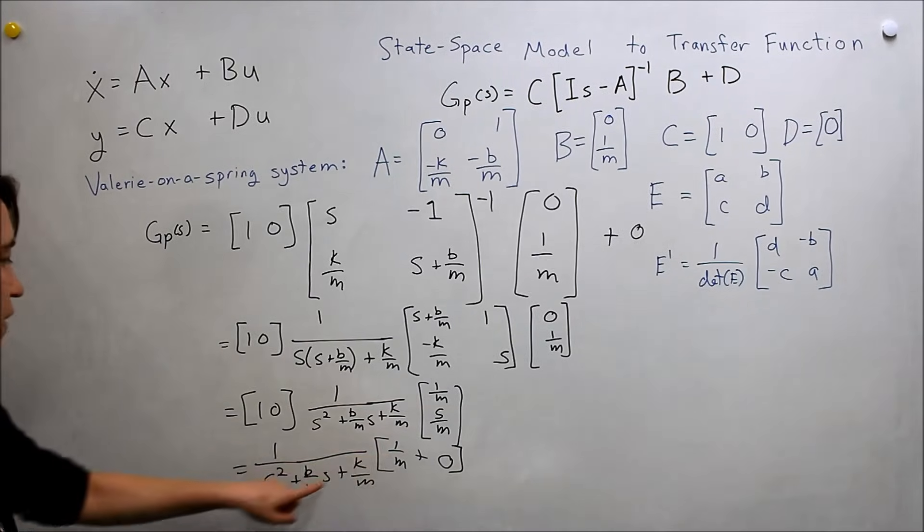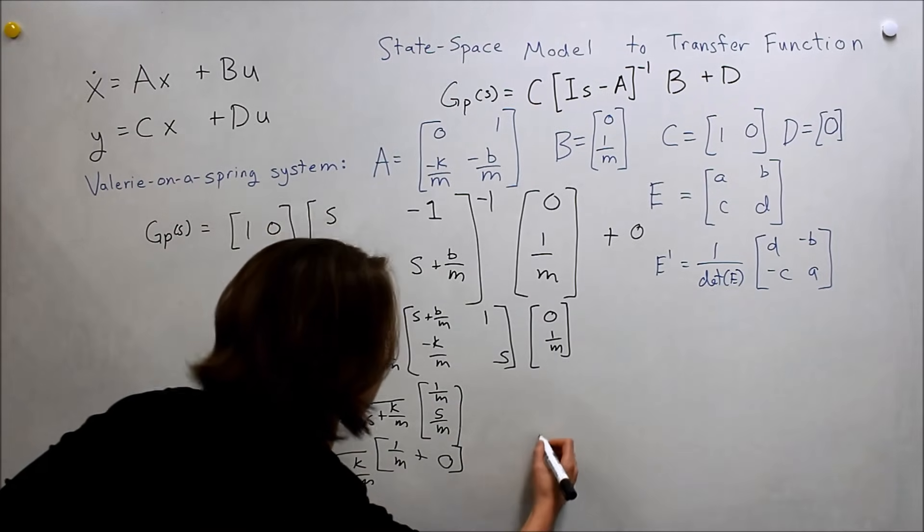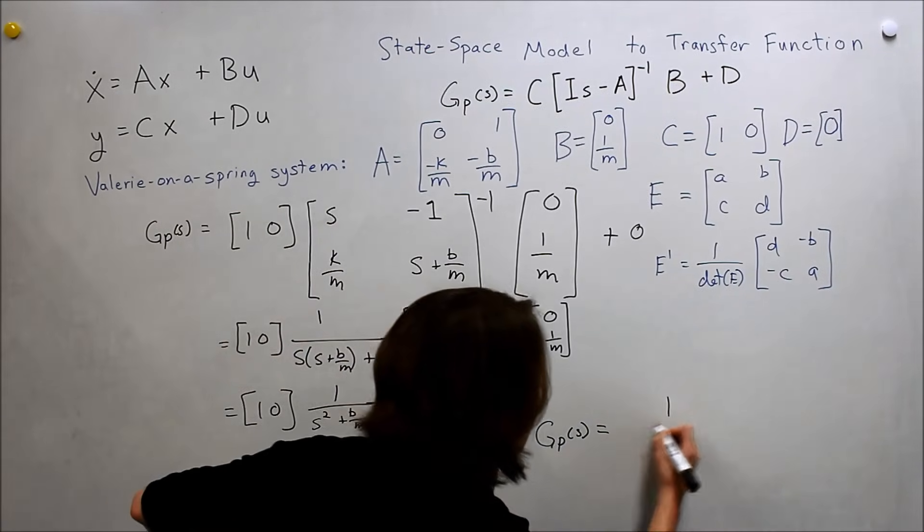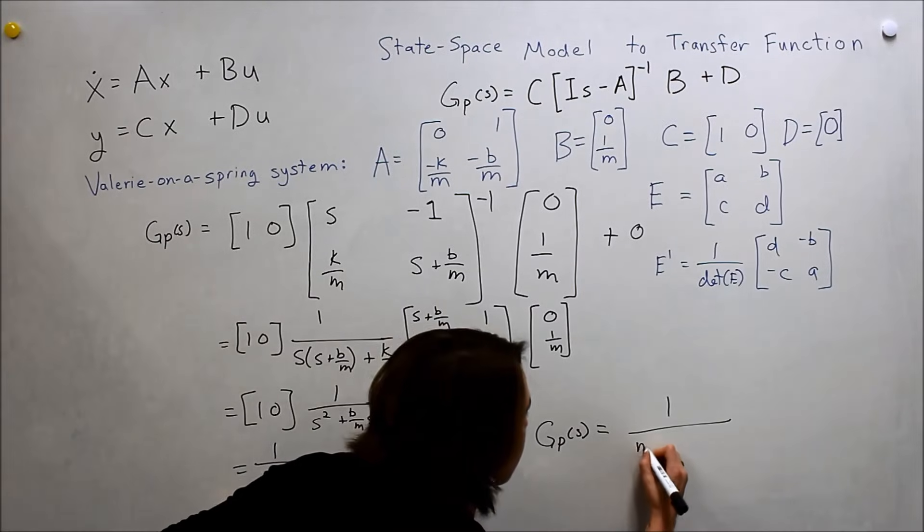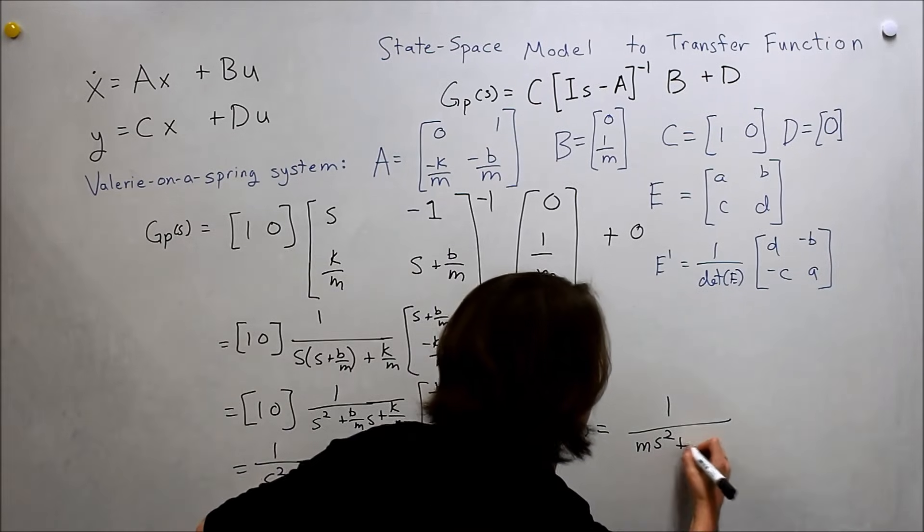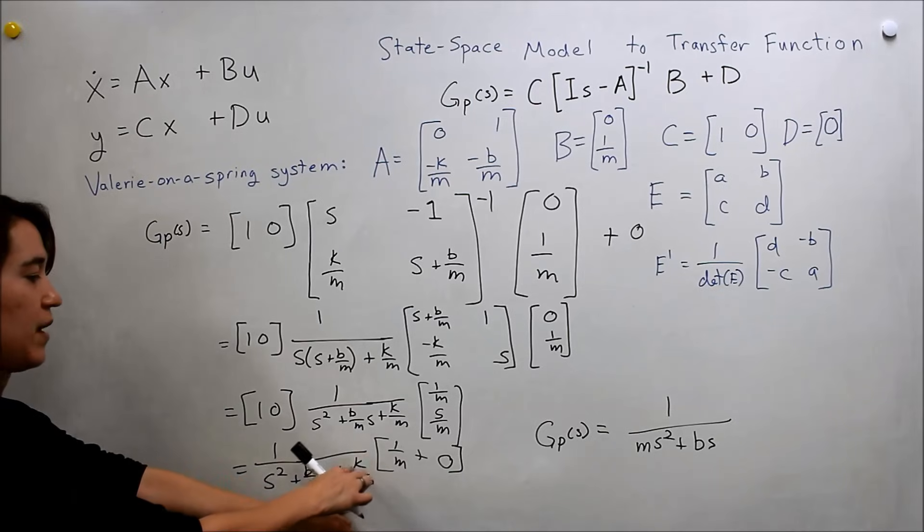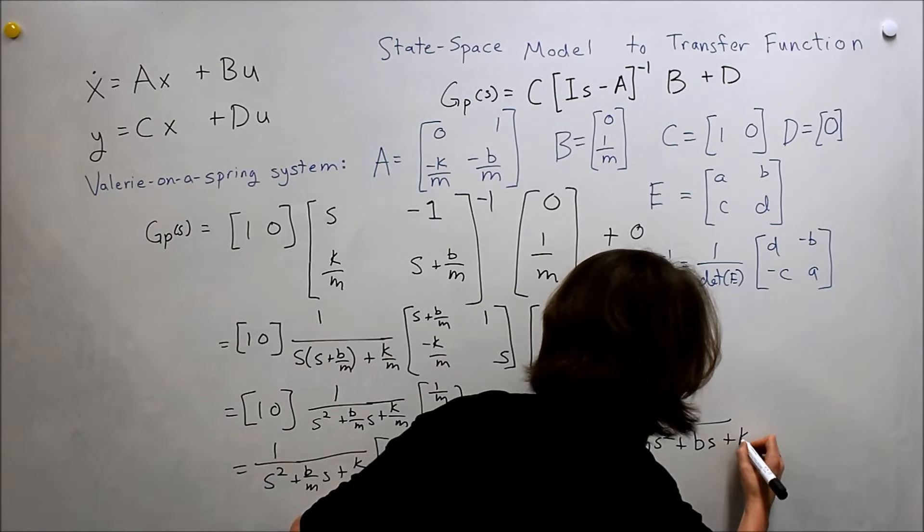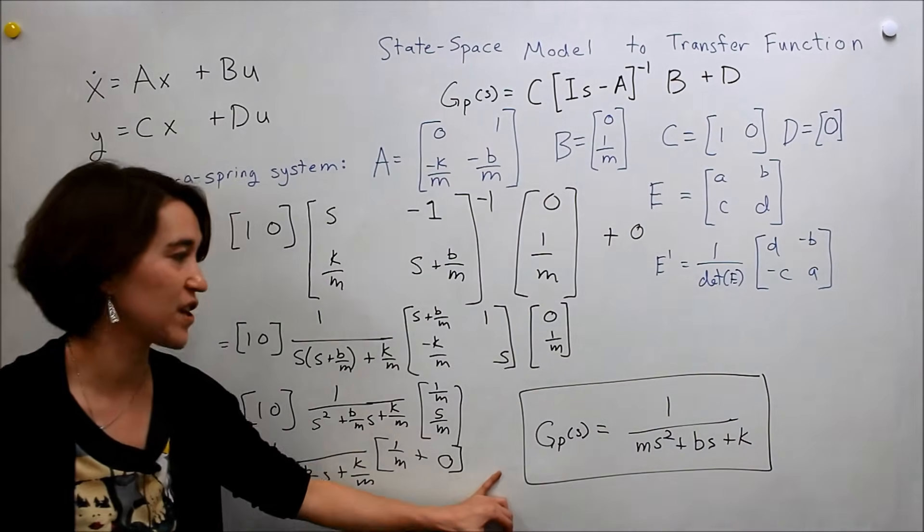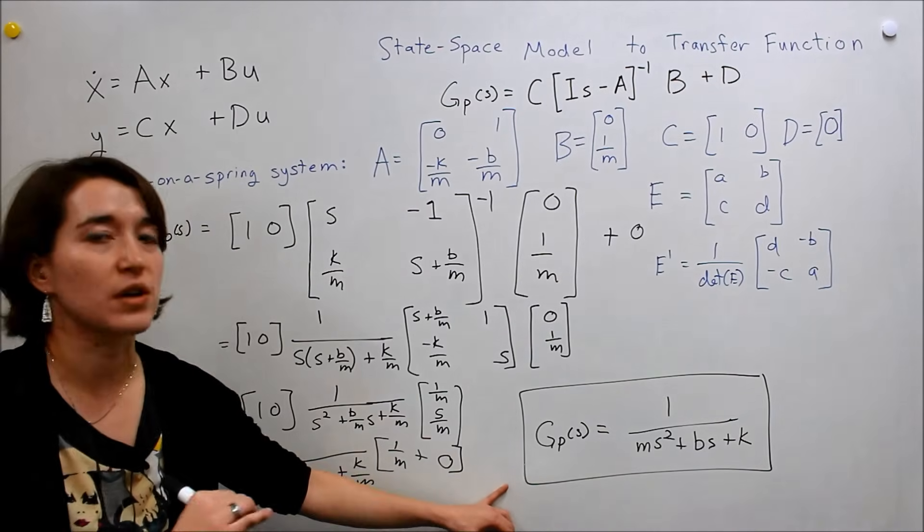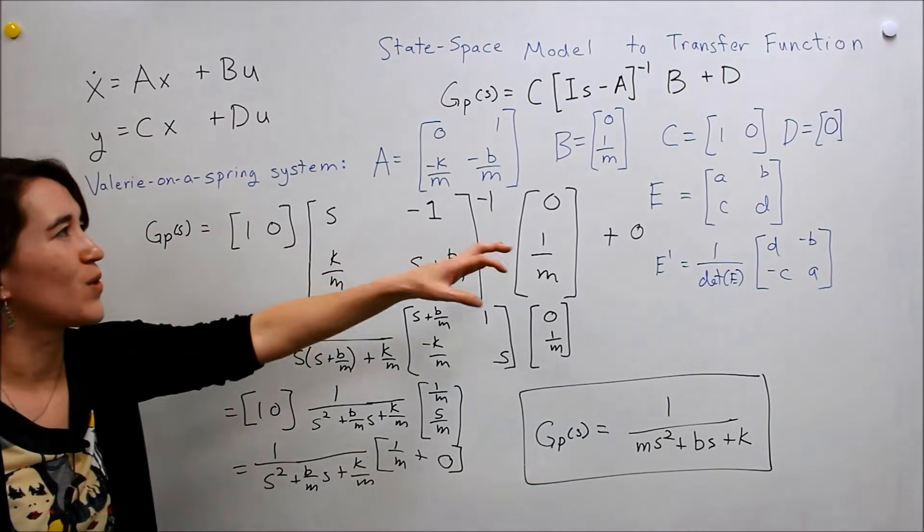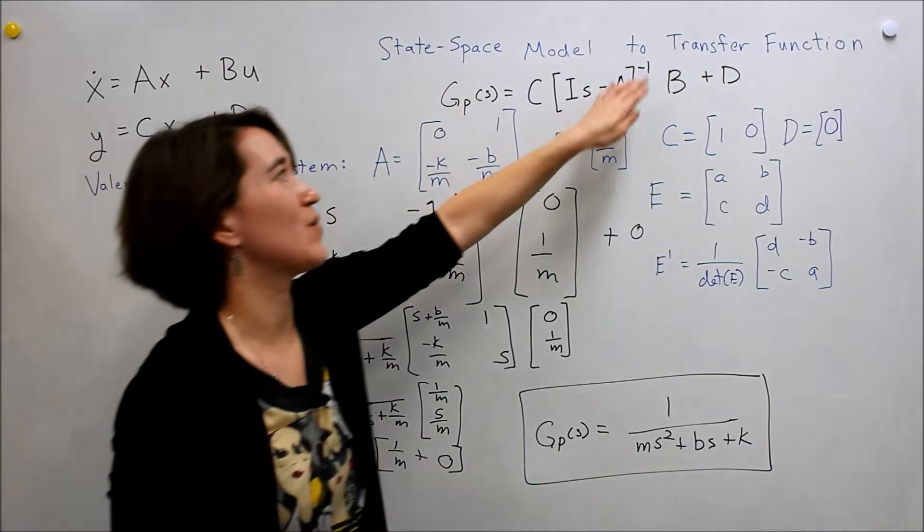Okay. So now we have a scalar here. We can multiply this all out. Why don't we actually move the m to the bottom. And we will get gp of s, so the transfer function, is equal to one over, so m times s squared, plus m times b over m, so b, s, multiply the m, so plus k. And this should be equal to our transfer function. If we go back and check the original transfer function that we did, we'll see that they are the same. So this was successful in our transformation.